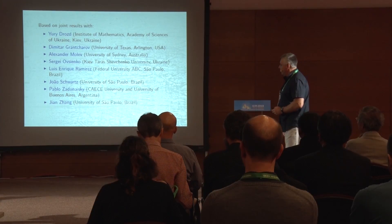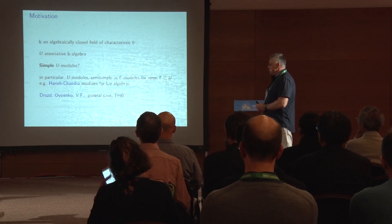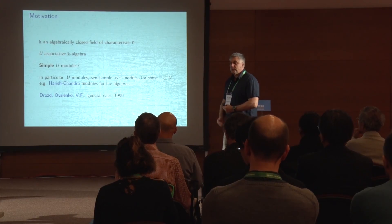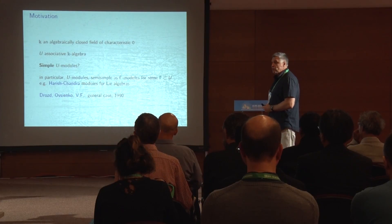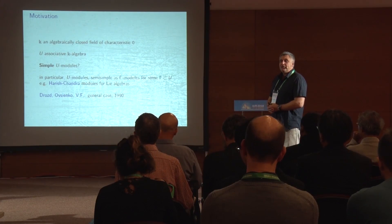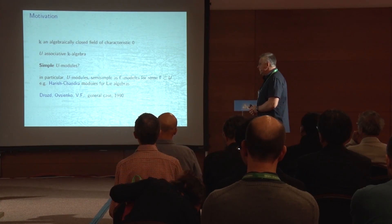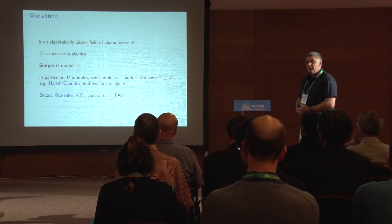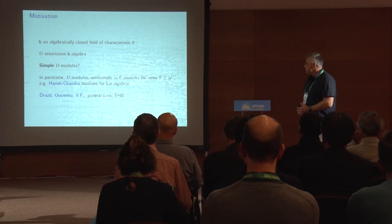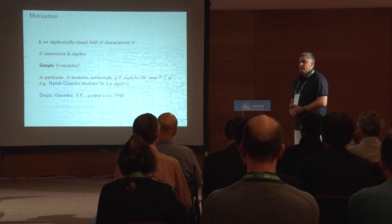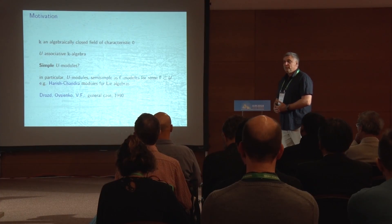Here is a brief outline of my talk. I will start with the motivation. I will always assume that the field is algebraically closed of characteristic zero. Let's imagine that we have an associative k-algebra and we want to study simple modules. If this algebra is finite dimensional then there is a well-developed theory, but if U is infinite dimensional our tools are quite limited, and we need to make certain assumptions. One possibility is to consider those U-modules which are semi-simple as gamma-modules for a certain fixed sub-algebra gamma.